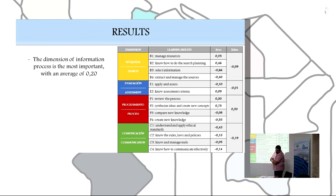If we transfer the results in set scores, we obtain this table about the average of standardized dimensions. The dimension of information process is the most important with an average of 0.2.